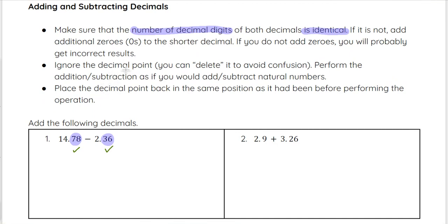We are going to ignore that decimal point. If it helps, you can actually take it out to start and perform the addition or subtraction as if you would if those were whole numbers. For example, we are going to do 14.78 minus 2.36. But in the end, we will place the decimal point back in the same position that it started with before performing the operation, meaning we are going to place it in our answer with two decimal digits. Our answer will have two decimal digits because that's how many decimal digits each of our original numbers started as before we did the subtraction.